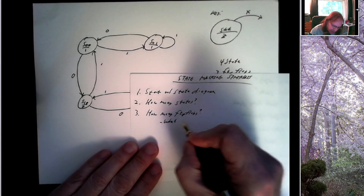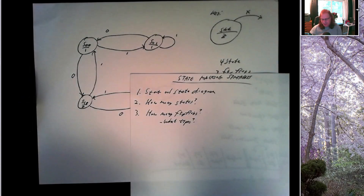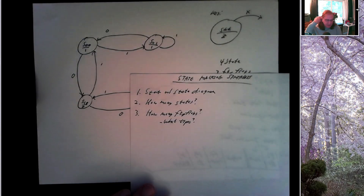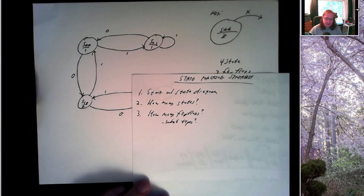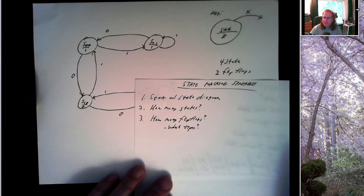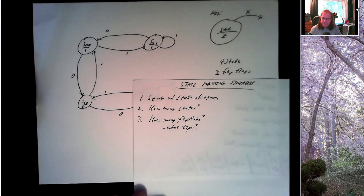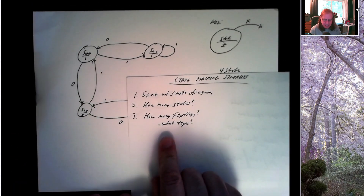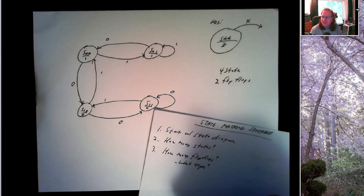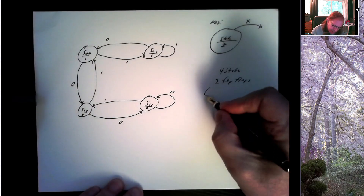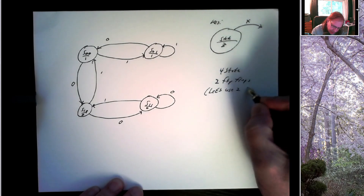Now the question of what type of flip-flops. We can build a state machine with D flip-flops, T flip-flops, JK flip-flops, or SR flip-flops. Sometimes we'll be told — on a homework or test problem — to use JK flip-flops, or only D flip-flops may be available. In general, using a JK flip-flop is more work to design but produces a simpler circuit. The easiest case is D flip-flops because they have the simplest behavior. So let's use two D flip-flops.